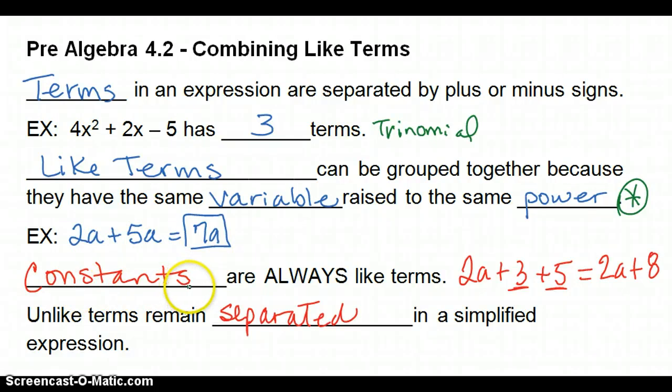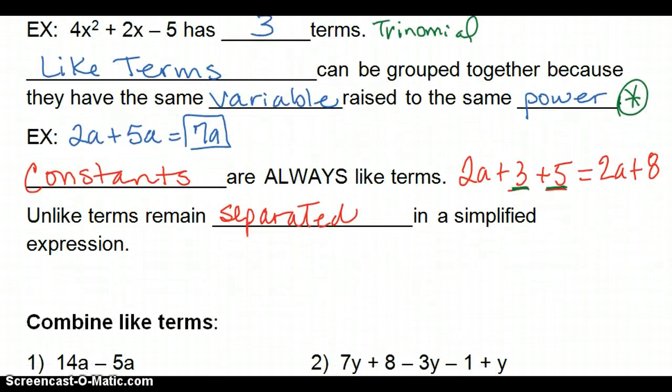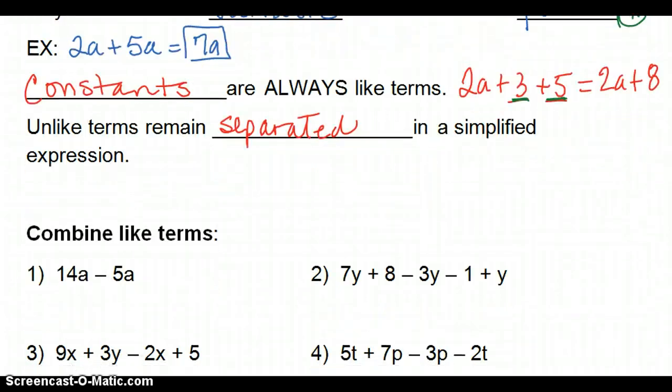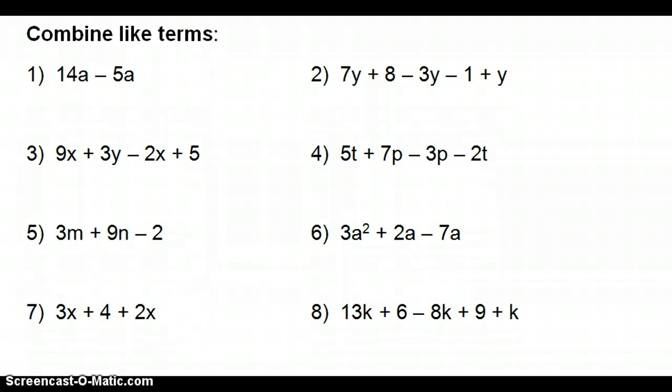If there are constants in your terms, then the constants are always going to be like terms. So, 3 and 5, since they do not have a variable, they're called constants. They're like terms, so you can combine those to make 8. Unlike terms remain separated. So, here, they're separated. The 2a and the 8 are separated because they're not like terms. So, I'm going to give you some problems to practice.